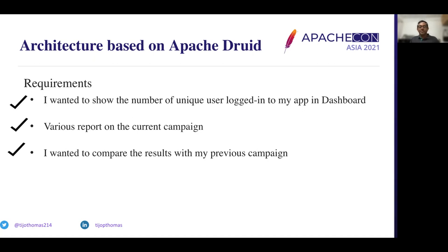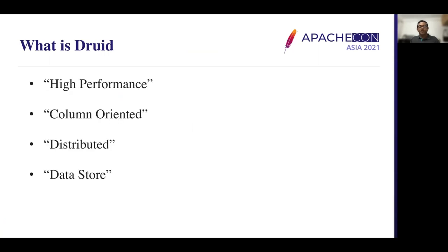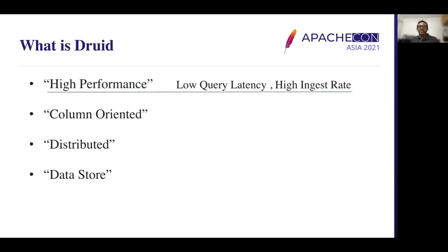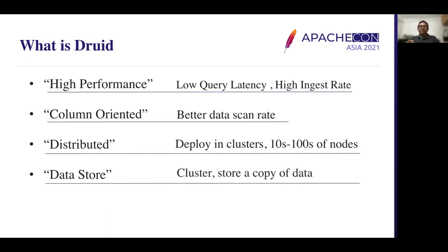What is Druid? Druid is an Apache open source, high-performance, column-oriented distributed data store. High-performance means low query latency and high ingestion rate. Column-oriented means the best possible scan rate. Distributed means it can be scaled to hundreds and thousands of nodes. It uses a clustered architecture where a copy of the data can be stored locally and queried from it — one of the reasons Druid is very fast.